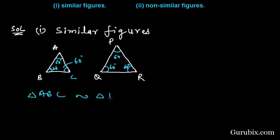This is the first example. Let us give the second example. Suppose we have a square ABCD and another square PQRS, so these two figures are also similar.